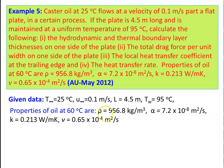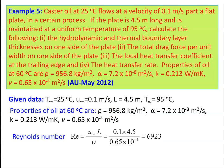Reynolds number = U∞·L / ν = 0.1 × 4.5 / (0.65 × 10⁻⁴) = 6923. Since Re = 6923 is much less than 5 × 10⁵, the flow is laminar.